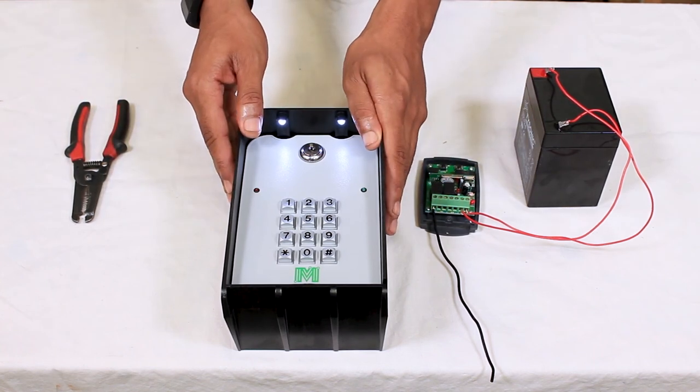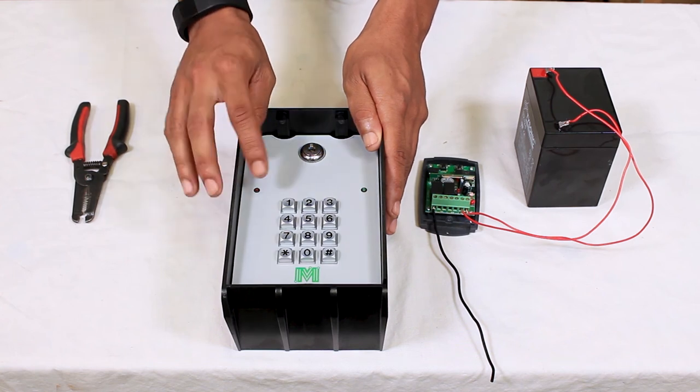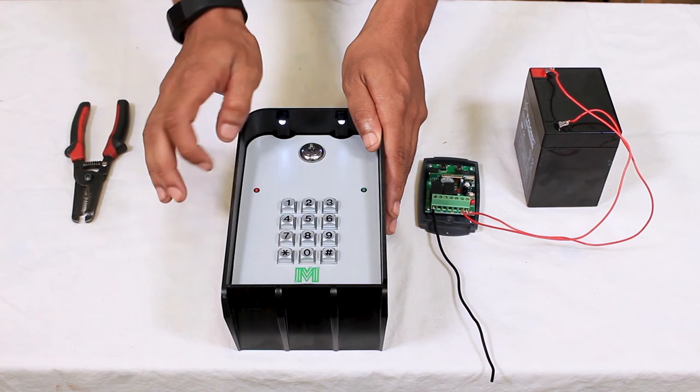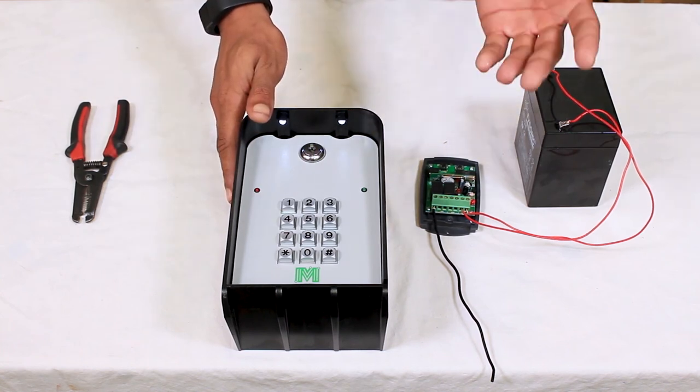Lastly, just to test the keypad and make sure that it's all working in unison, we're going to just enter the code which is 1934. You hear the relay click and the gate should open.